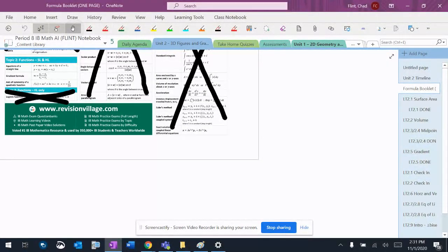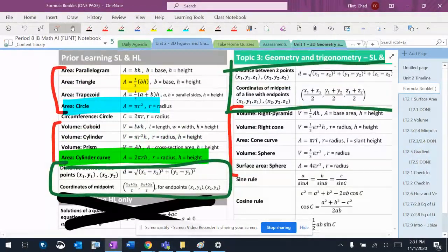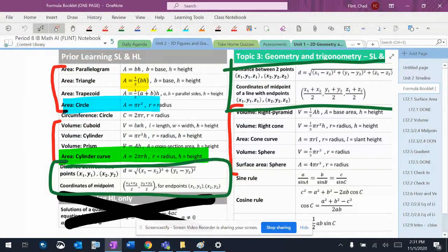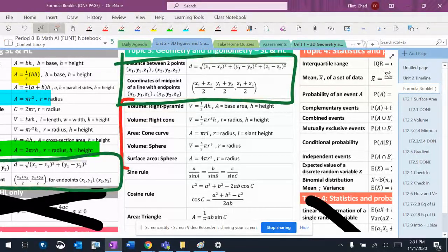If I go look real quick right here, you've got the wrong spot here. You've got the cylinder curve on prior learning and on the geometry stuff, you have cone curve and you have sphere. So those are in there.